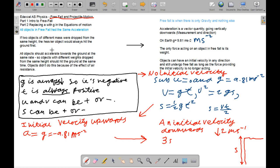So all objects in free fall have the same acceleration and Galileo once discovered, or disagreed, that all objects would accelerate towards the ground at the same rate. So objects with different mass dropped from the same height should hit the ground at the same time.